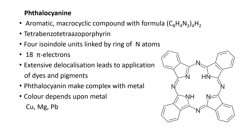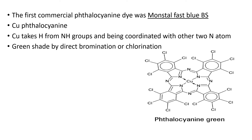The metal used in the complex can vary. The color depends on the metal. Metals include copper, magnesium, lead, and zinc. There are different types of phthalocyanine dyes. The first commercial phthalocyanine dye is copper phthalocyanine. Copper replaces hydrogen from the NH group and coordinates with the other two nitrogen atoms. Green shades are produced by direct bromination or chlorination.